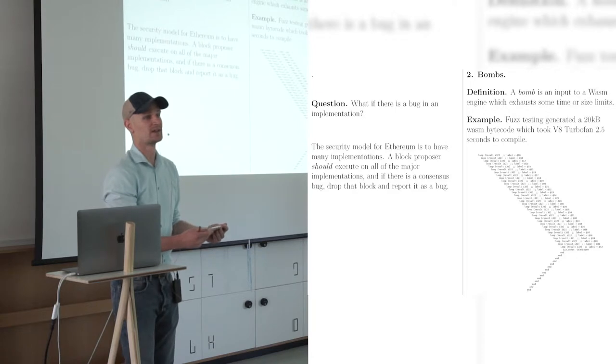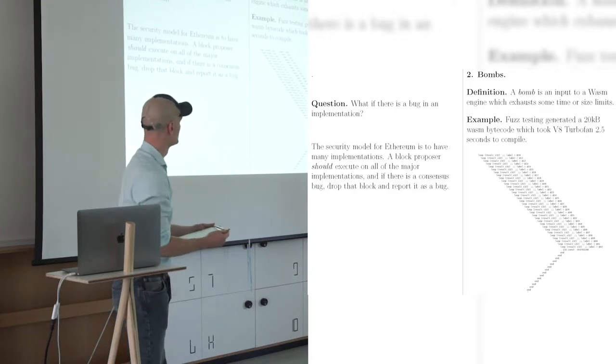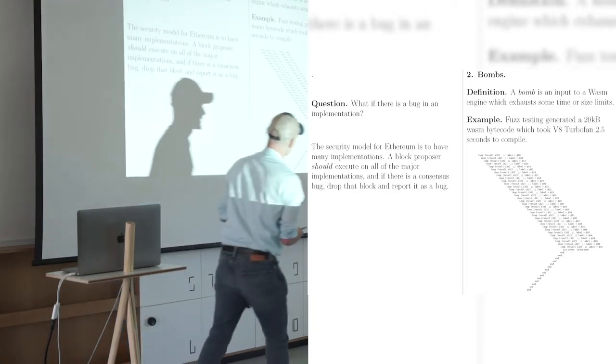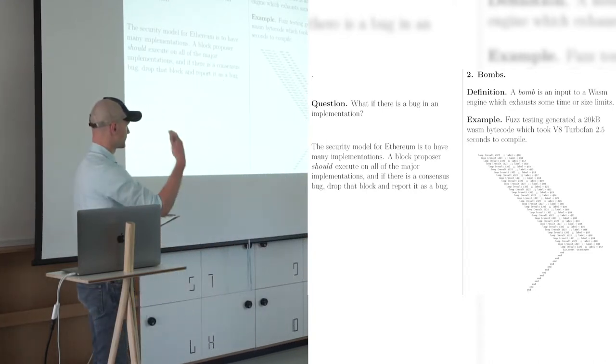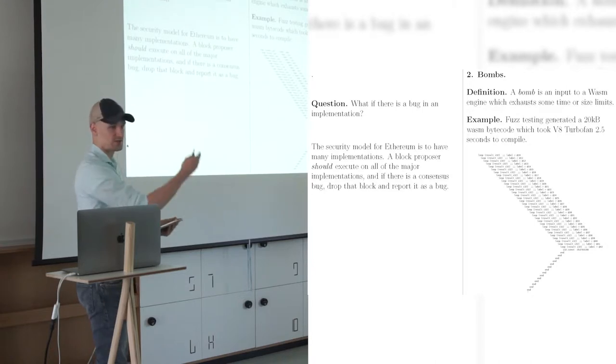And Guido fuzz tested and found 2.5 seconds to compile in one of the engines. And that would be a bomb by our definition. So we would classify that as a bomb. What's the instruction inside? Oh, it's just I32 const. Whatever. It was, okay. So this is generated by fuzzing. It's just some whatever.